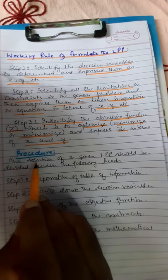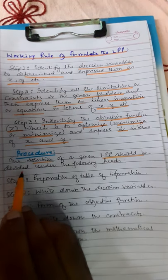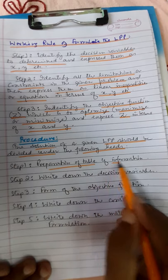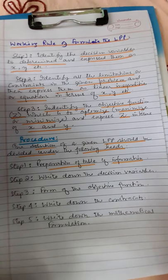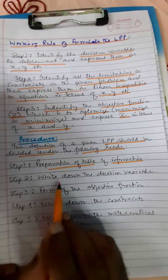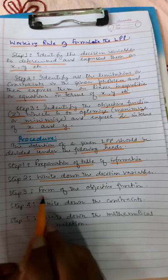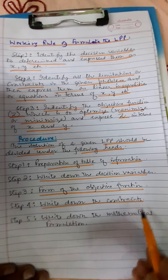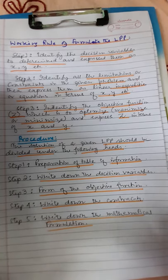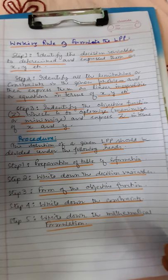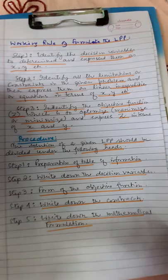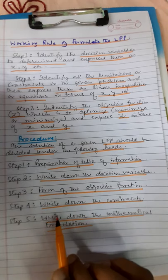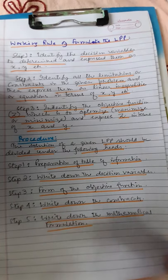Procedure for solving a given LPP, divided under the following heads: Step one — preparation of the table of information. Step two — write down the decision variables. Step three — form an objective function. Step four — write down the constraints. Step five — write down the mathematical formulation.